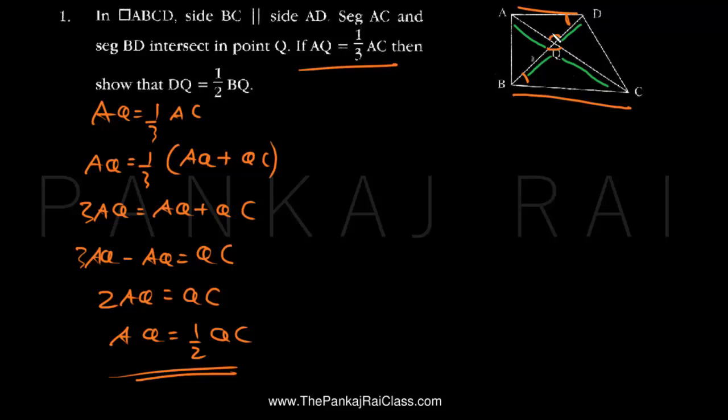If we look at the vertical opposite angles, we can see that the two triangles are similar. Triangle ADQ is similar to triangle CBQ. Here, angle D equals angle B, and angle Q is vertically opposite, so ADQ is similar to CBQ.